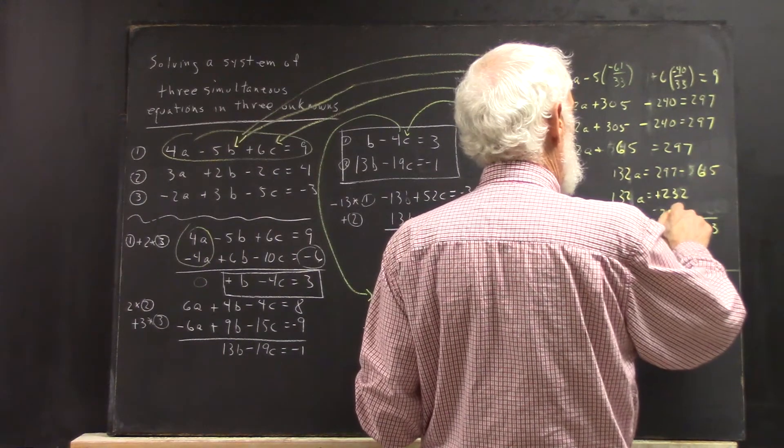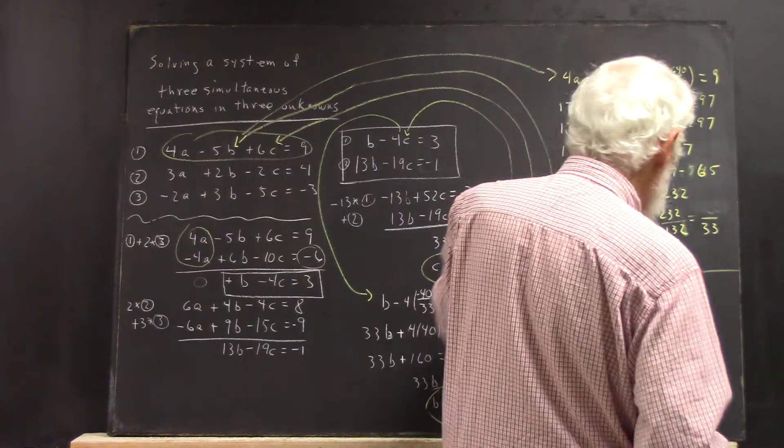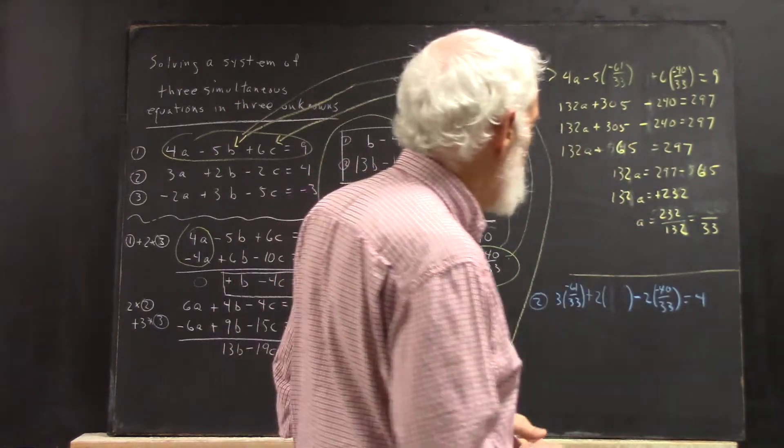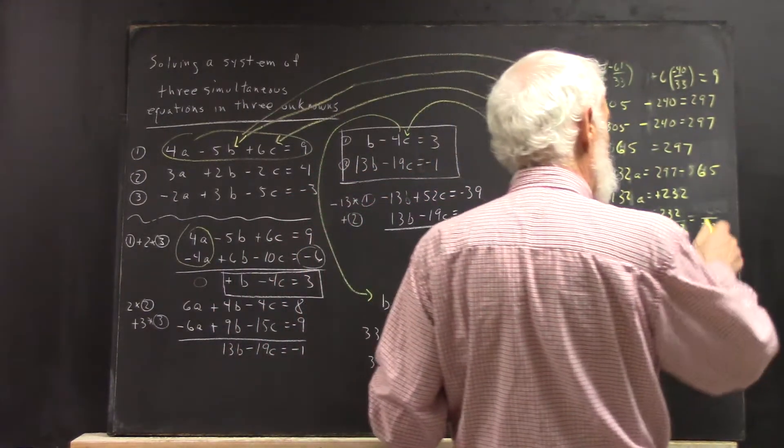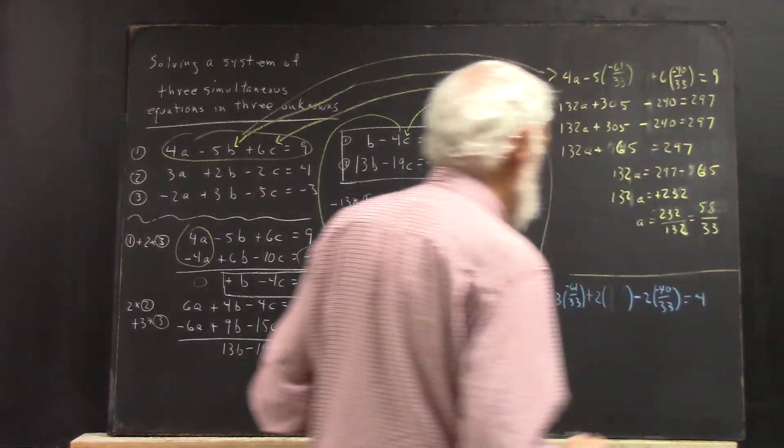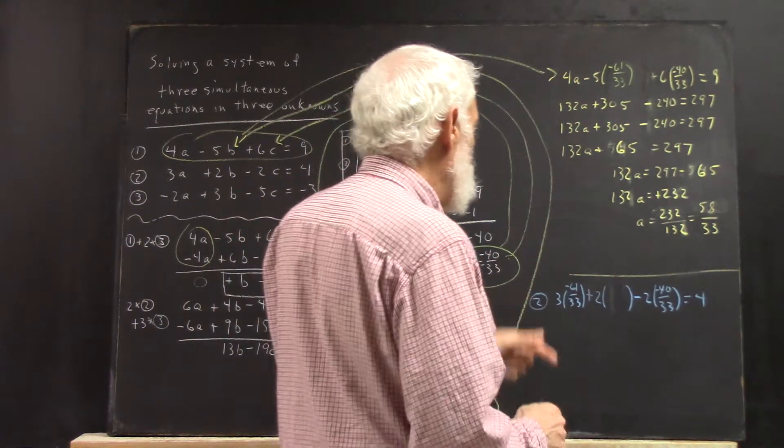So it's 232 over 132. Both of these are divisible by 4. 232 gives me 58 over 33. And that makes a positive.